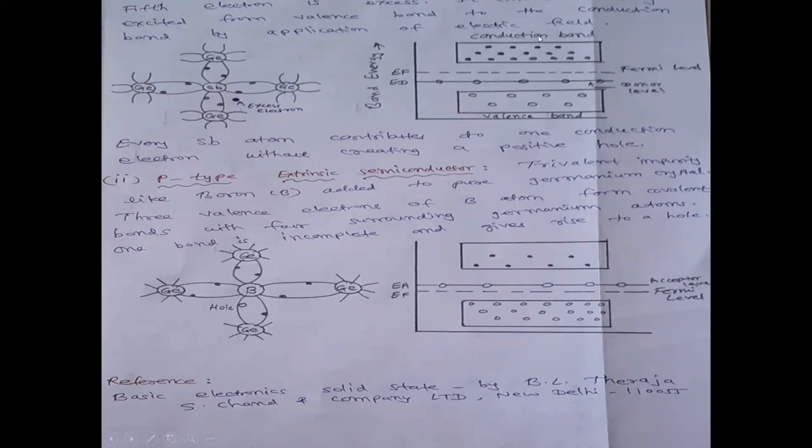And this electron is excited from valence band to conduction band by application of electric field. This is band diagram. Conduction band, valence band. Fermi level, donor level. These are electrons in band energy. Now, every antimony atom contributes to one conduction electron like this without creating a positive hole.